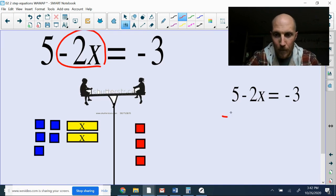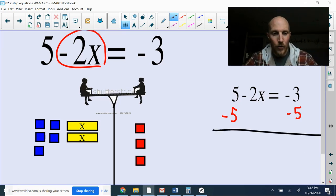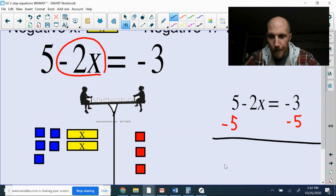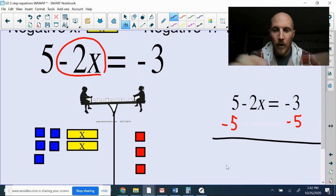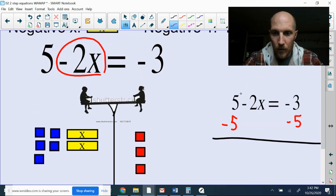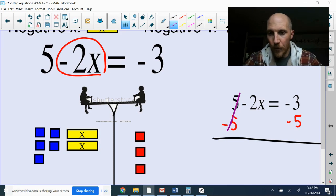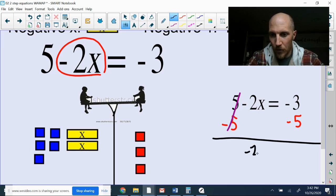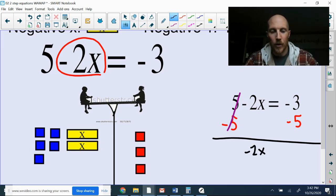So minus 5 on both sides of my equal sign. And if I do that, then these positive 5 and the minus 5, those are going to add together to make zero. So it's going to cancel. The negative 2x is still here. The negative sign, or we might have wanted to call it a minus sign to begin with. Really, the words minus and negative are interchangeable.